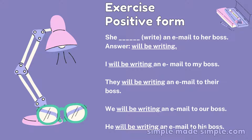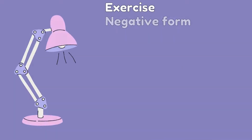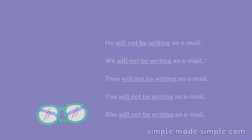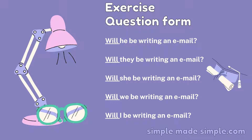For the positive form: 'She will be writing an email' or 'They will be writing an email.' For the negative form: 'We will not be writing' or 'You will not be writing an email.' To form a question: 'Will he be writing an email?' or 'Will they be writing an email?'